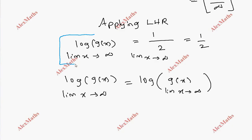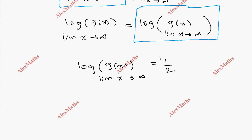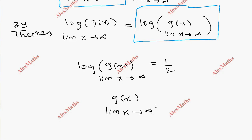Therefore, the limit of log g(x) as x extends to infinity equals 1/2. By the theorem, we take e to the power of both sides, so the limit of g(x) equals e^(1/2), which is the square root of e. So root e is the answer.